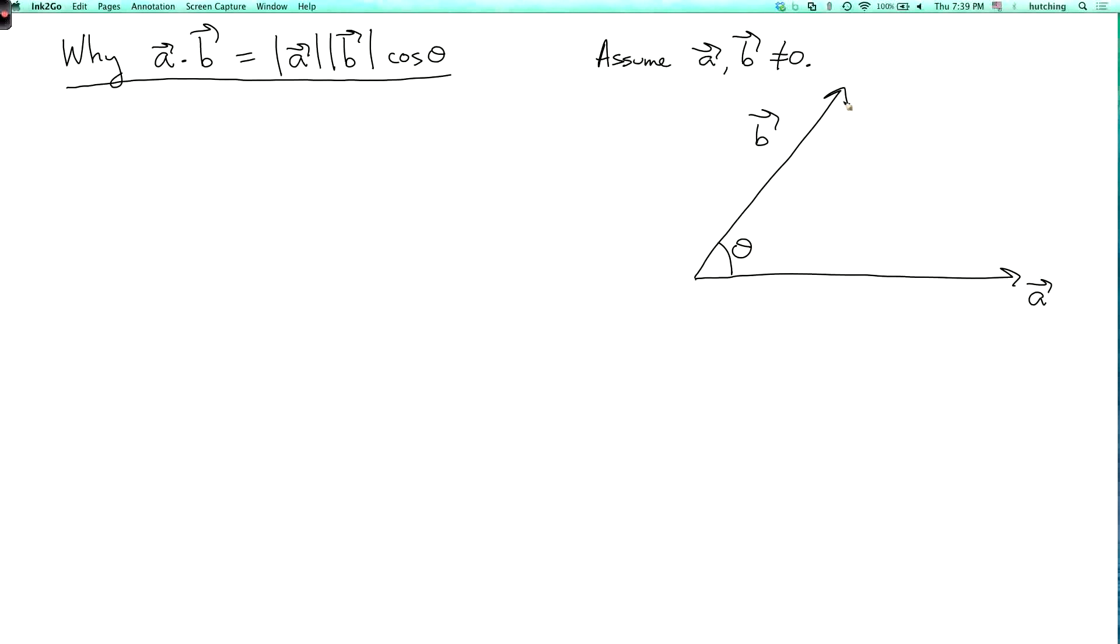Now the first step is I'm going to drop a perpendicular from b to a like this. What I mean more precisely is the following. I claim that there is a unique scalar c such that b minus c times a is perpendicular to a.